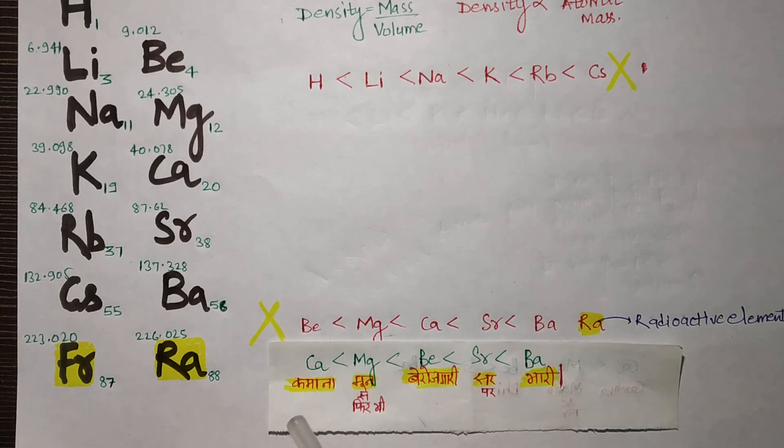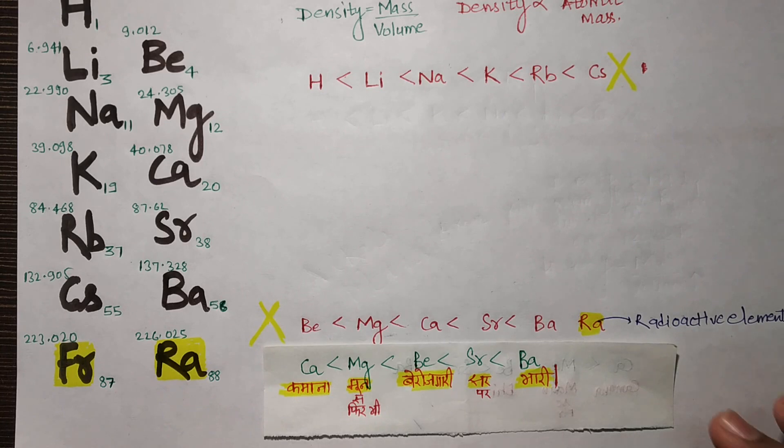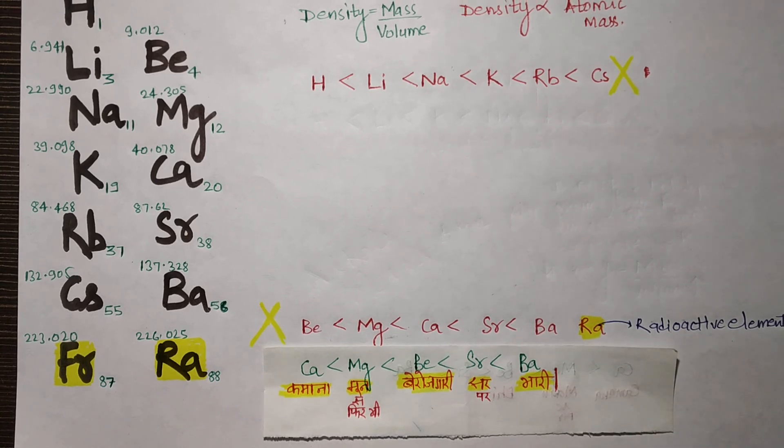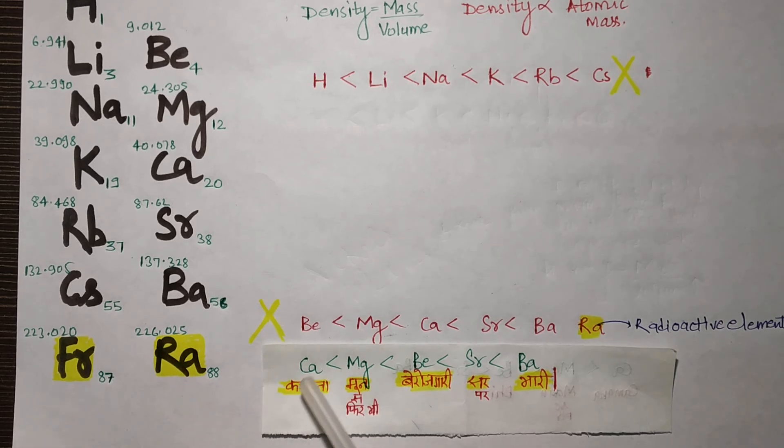To remember this with a trick: 'Kamana man se, phir bhi biroz gari sar pe bhari.' This is a clever trick you can relate to yourself. Kamana - Ca is calcium. Man - when you manipulate in English, it becomes M for magnesium. Biroz gari - Be is beryllium. Sar - S is strontium. Bhari - B is barium.